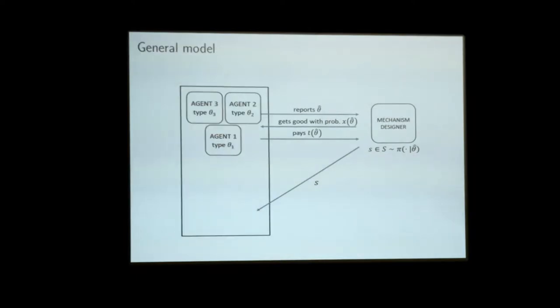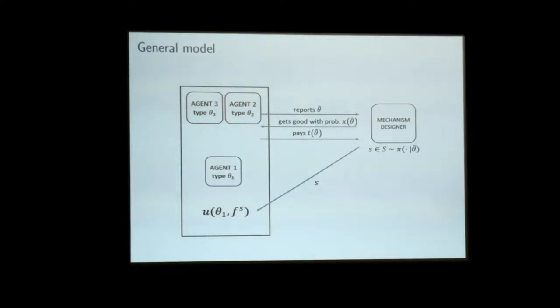I'll give you a hint of the general model. Pretty much everything I'm going to say extends to a case where you could have N agents in the mechanism — so it could be a proper auction — as long as it's just the winner who interacts in the aftermarket. The way I want you to think about the aftermarket is just as a black box that spits out a continuation payoff for the winner that depends not just on the type of the winner, but also on the posterior belief about the type induced by the mechanism.